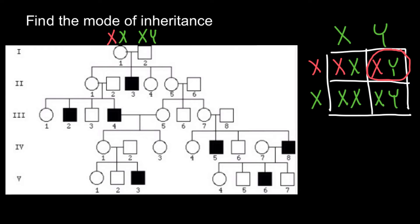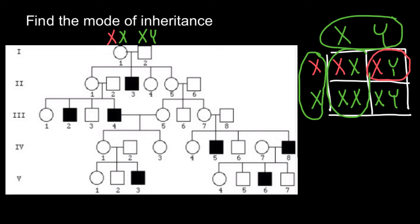The phenotype of the mother would be normal because she has another X chromosome with the dominant normal allele. The father also has normal phenotype. All of the daughters would also have normal phenotype, though 50% of the daughters would be carriers. And 50% of the male progeny would be phenotypically normal.